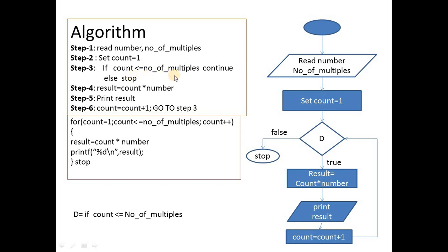In step 2 we set count as 1. In step 3 we check the condition: whether count is less than or equal to the number of multiples. For example, if you need 5 multiples, it has to display 1 through 5 numbers. So count starts at 1 and ends at the number of multiples. If the condition is true, continue; if false, stop.